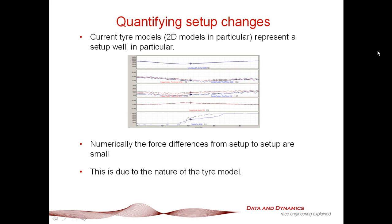To kick this discussion off, let's talk about quantifying setup changes. Current tire models, 2D tire models in particular, represent a setup really well. Part of their power is that you can achieve very good correlation right throughout the speed range of a car, right from the low speed, from 80 to 100k an hour, right through to the high speed, we're talking 300kph.